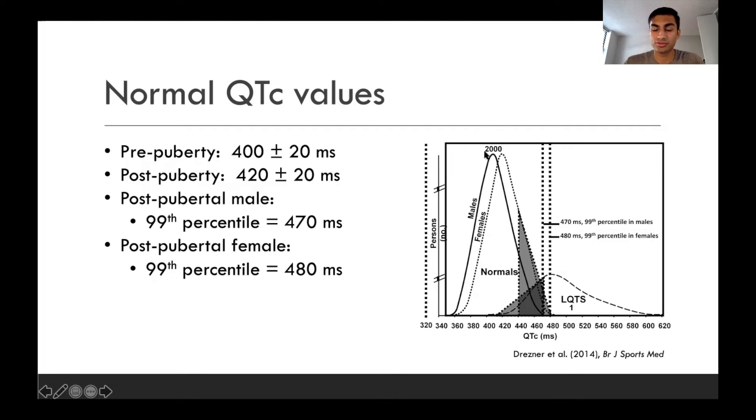Okay, so this is short. So this is showing a normal curve of where the normals are. See, around 400 millisecond range is essentially what's most common. LQTS is long QT syndrome, so you can see how that's elevated towards the right here.